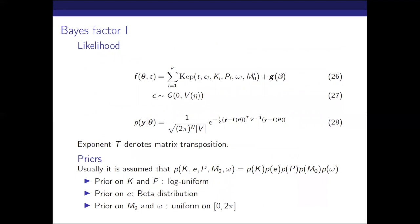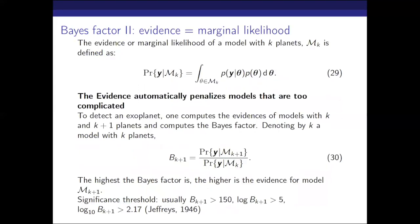The second method is the Bayes factor. Our model of radial velocity data has a likelihood and priors. To define the Bayes factor, we first need to define the evidence, or marginal likelihood: the integral of the likelihood times the prior over all possible combinations of parameters in a model with K planets. The evidence automatically penalizes models that are too complicated — just because your model is more complicated doesn't mean the evidence is going to be higher.